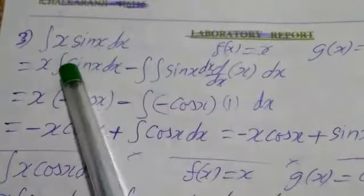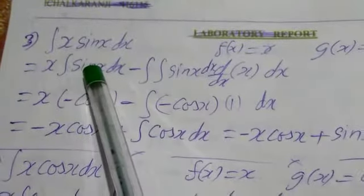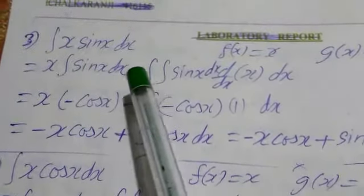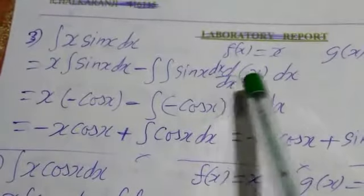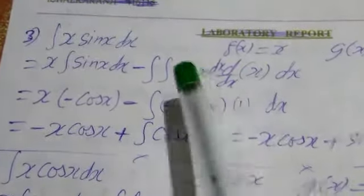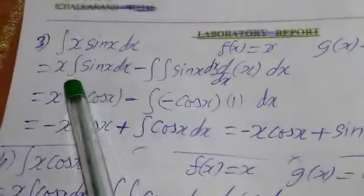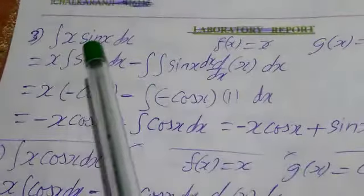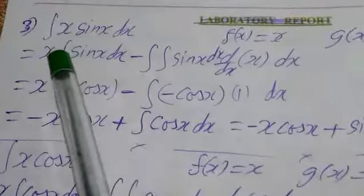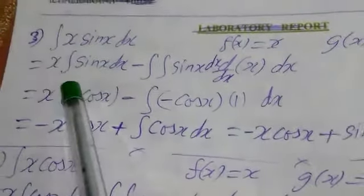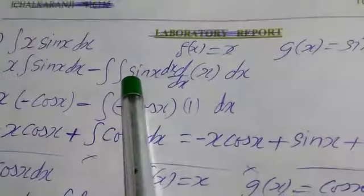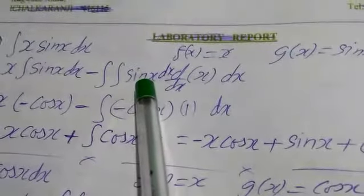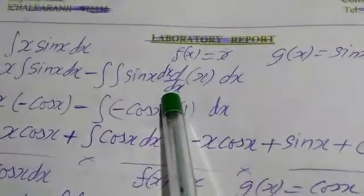Suppose by chance if you take sin x as the first term, then differentiation of sin x will become cos x — it will not get simplified. That's why we are taking the first term as x and the second term as sin x. So we will write the formula: first term as it is, integration of second term, minus double integration of second term into d by dx of first term dx.